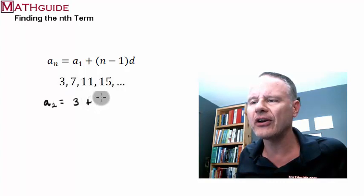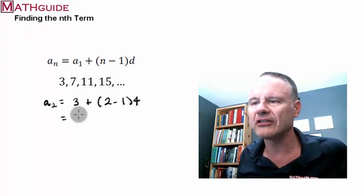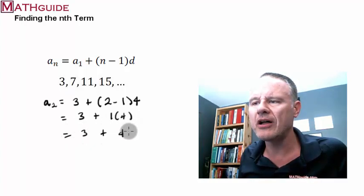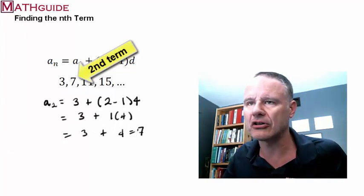Then, what you're going to do is, if you want the second term, n is 2. And we already said that the common difference was 4. So, if you did just a little bit of work, you could see this is 3 plus 4 times 1, and you get 7. And we already knew that 7 was that term.